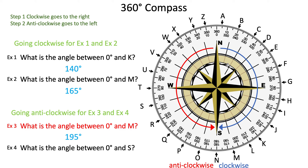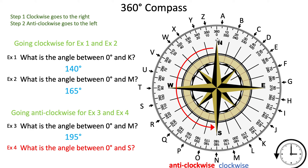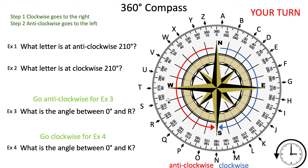Final example: what is the angle between zero degrees and S, going anti-clockwise? Count up: 0, 10, 20, 30, through 90, 100, and halfway between 100 and 110 — that gives us 105 degrees. Now it's your turn. Pause the video, answer the practice questions at your own pace, and the answers will be revealed in three, two, one. If you got those correct, well done! If not, there is always tomorrow.